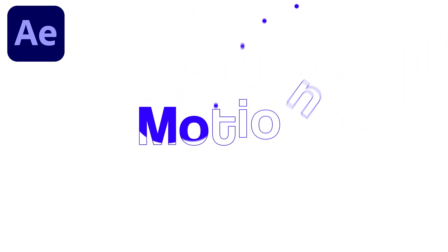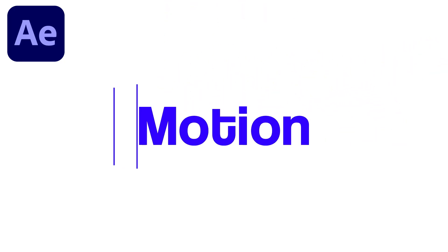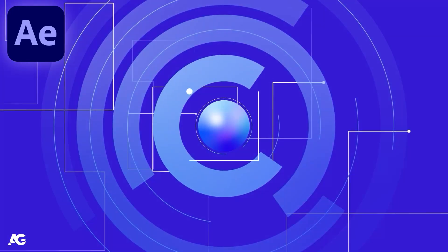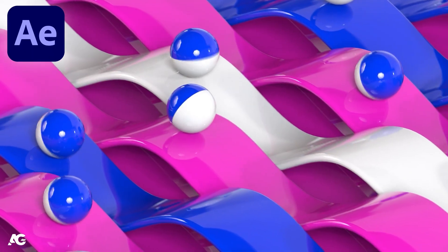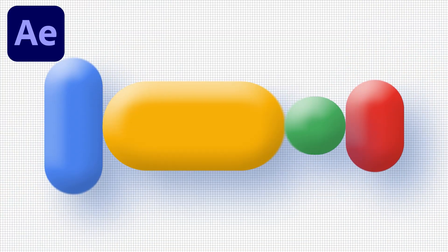Hey guys, welcome back to my channel AG Motion Designs. In today's video we are going to create this creative looping text animation inside of After Effects without using any third party plugin, but with the help of simple and cool tips and tricks inside of After Effects. If you want to learn more about motion graphics and other stuff in advance, don't forget to check out my Udemy courses — all links are available in the description.